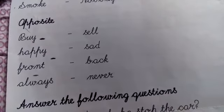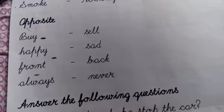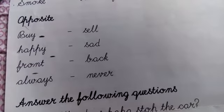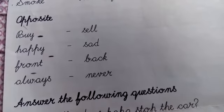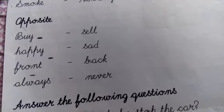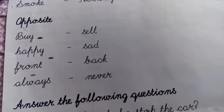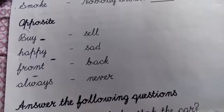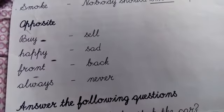Happy opposite is sad. Happy means khush, sad means dukhi. Happy opposite is sad. Next front. Front opposite is back. Front means saamne, back means peeche. Front opposite is back. Next heading is always.